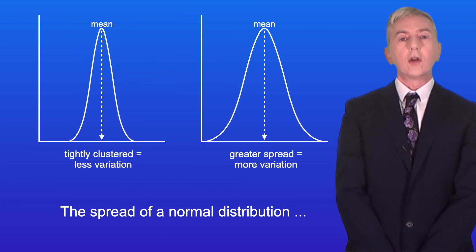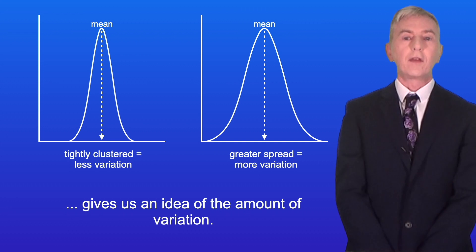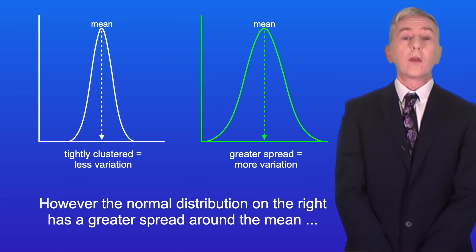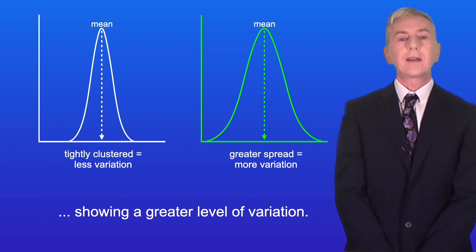Now the spread of a normal distribution gives us an idea of the amount of variation. The normal distribution on the left is tightly clustered around the mean. However, the normal distribution on the right has a greater spread around the mean, showing a greater level of variation.